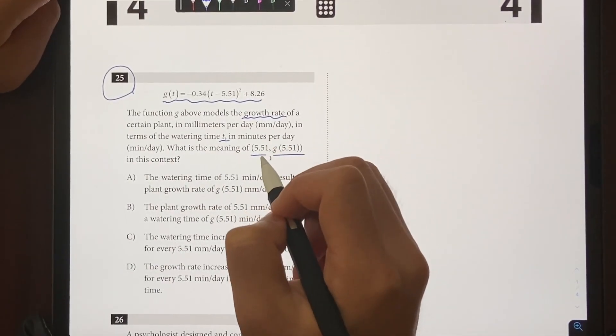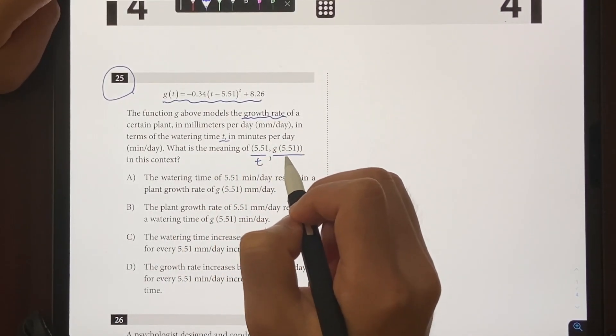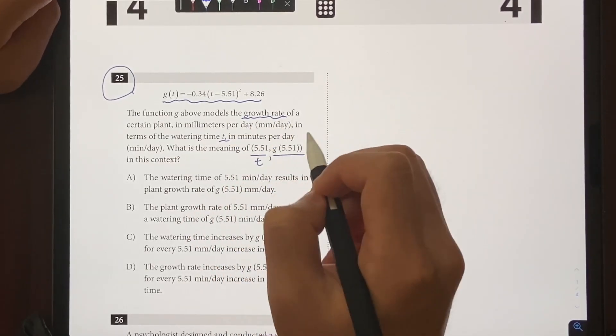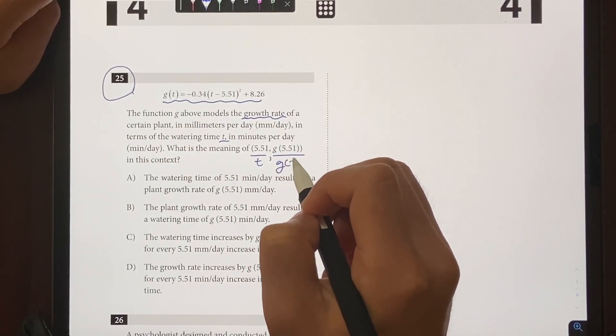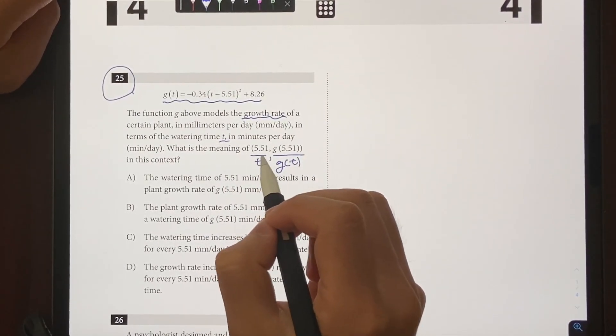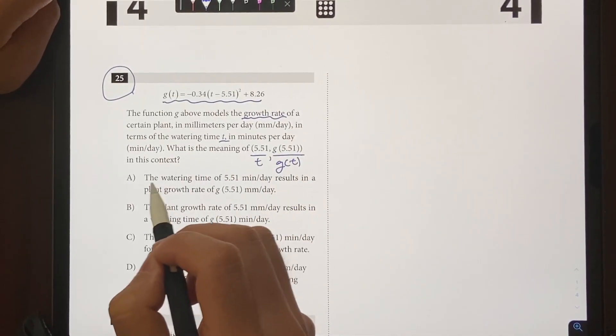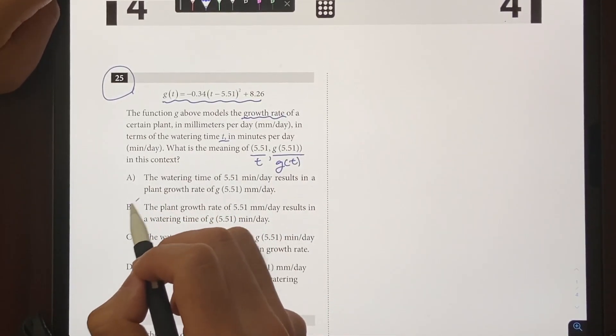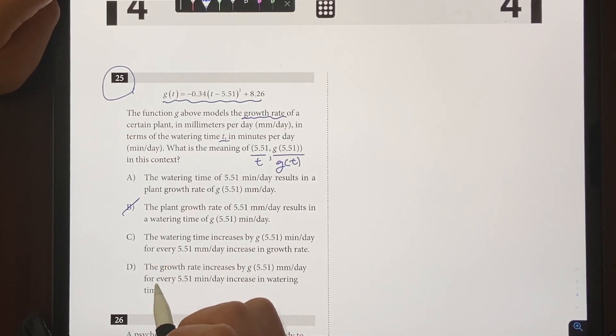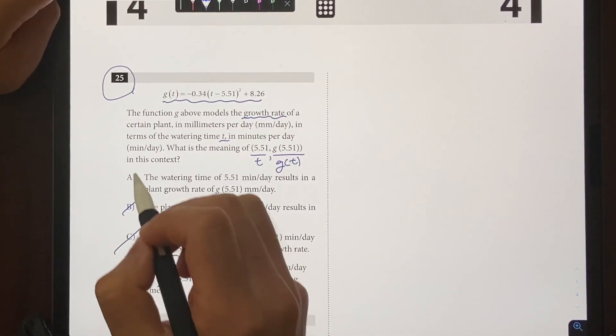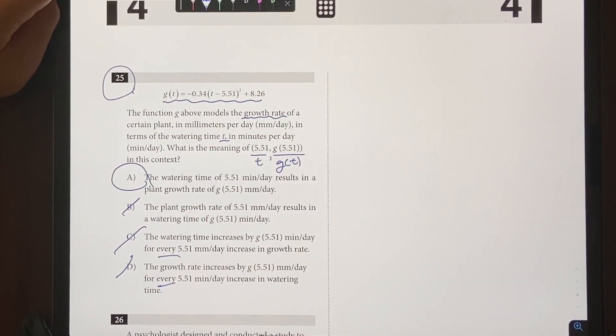Okay, so 5.51 is referring to the watering time, g(5.51) is the growth rate. So it's going to be g(t), and that results in that, which means A could work. B wouldn't work, C wouldn't work, so the answer is going to be choice A.